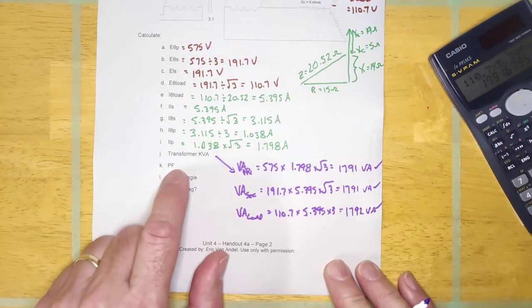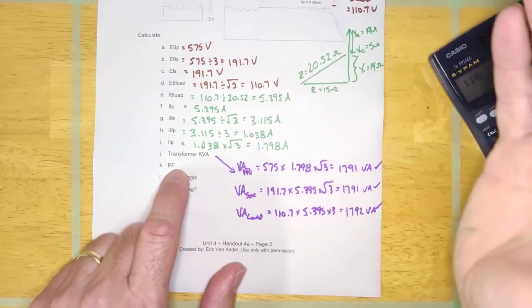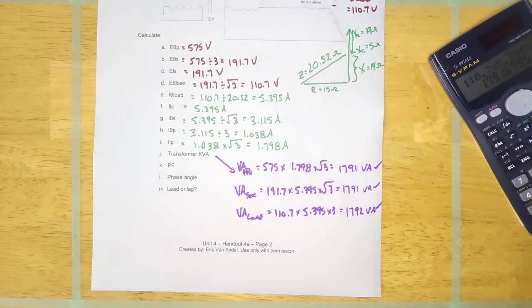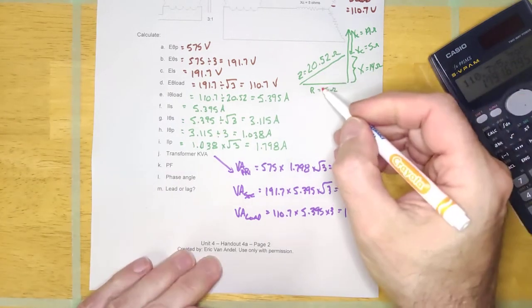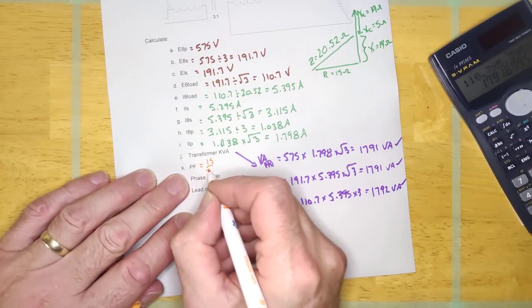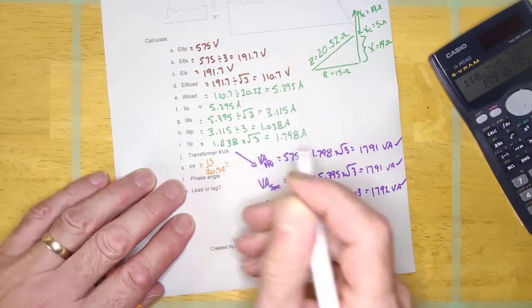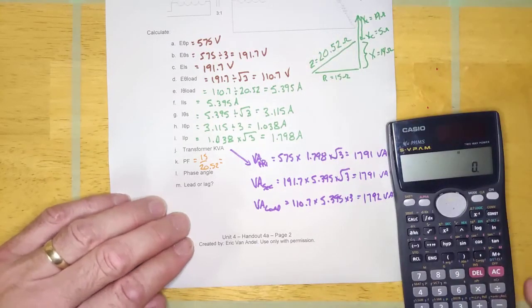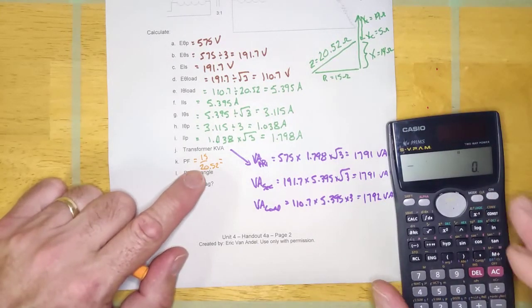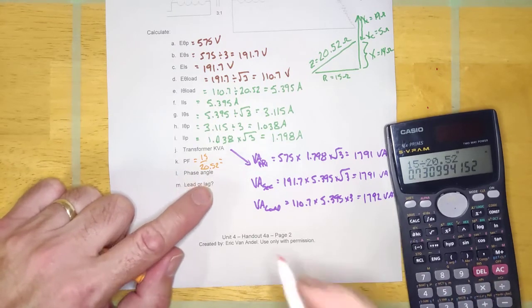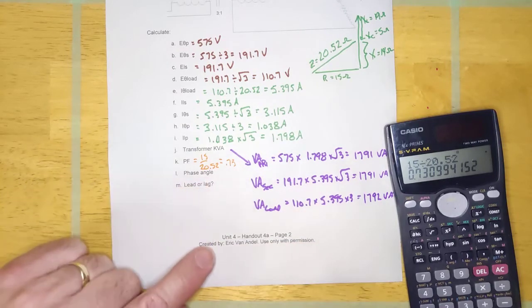Now, it's asking for the power factor. Well, I don't have any power phasors. But I don't need power phasors, right? If I know the angle, I can calculate the power factor. And, or I don't even need the angle. The power factor is always the adjacent over the hypotenuse. So, that power factor there should be 15 over 20.52. And that'll always work. You can also calculate the angle and hit cos, right? Because the power factor is the cosine of the angle. So, 15 divided by 20.52. Looks like the power factor is 0.73 for this particular guy.